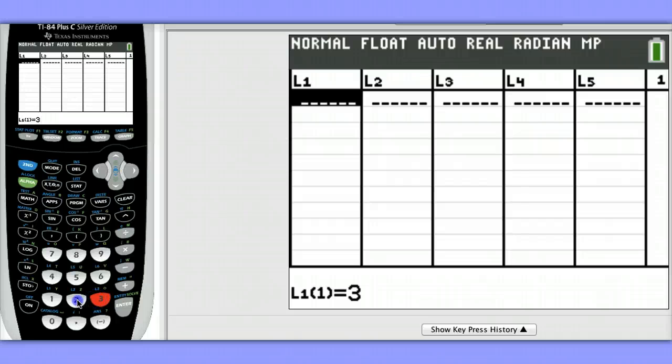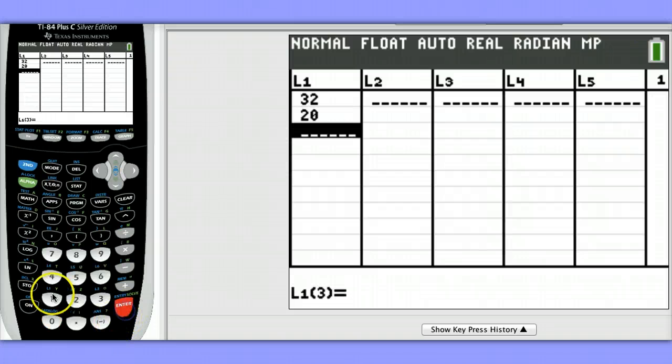There are 32 birthdays from January to March, 20 birthdays from April to June, 16 birthdays from July to September, and 12 birthdays from October to December.